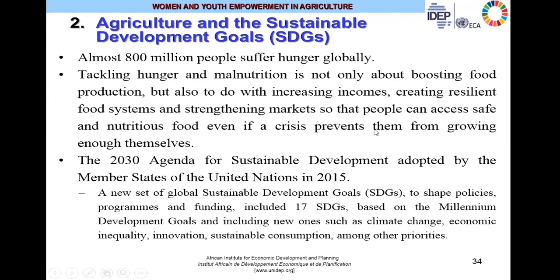The Millennium Development Goals were replaced by the Sustainable Development Goals. As we speak, almost 800 million people suffer hunger globally. Tackling hunger and malnutrition is not only about boosting food production, but also increasing incomes, creating resilient food systems, and strengthening markets so that people can access safe and nutritious food even if a crisis prevents them from growing enough themselves. The 2030 Agenda of the United Nations, under a Sustainable Development Mission, adopted by Member States in 2015, was about a new set of global development goals to shape policies, programs, and funding. It included 17 SDGs based on the Millennium Development Goals, and including new ones such as climate change, economic inequality, innovation, and sustainable consumption.